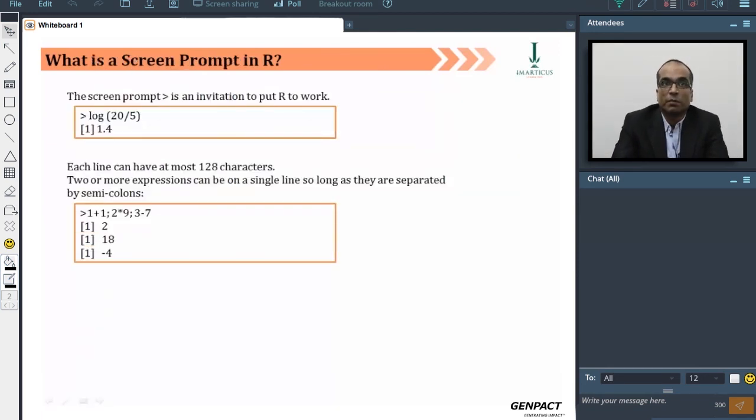When you see on the screen a prompt like the greater than sign, you usually won't see this on the script window - this would be seen only in the console window. If you see a prompt sign with the greater than, that means R is asking you to give an input. That's where you will write your code. When you say log of 20 by 5, you're asking R to execute a log of 20 by 5. Here, log means log to the base e, that's a natural logarithm, not log to the base 10 or log to the base 2.